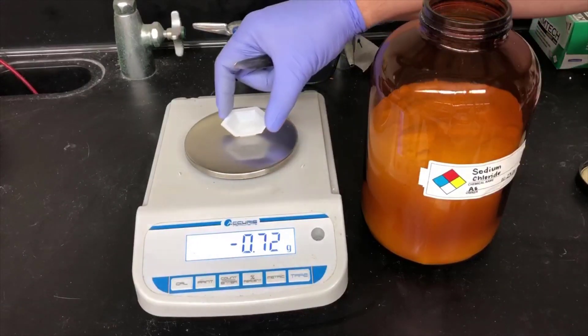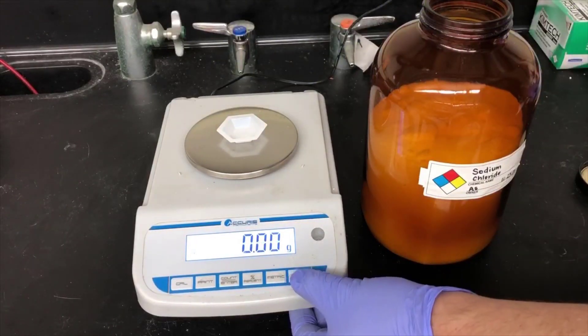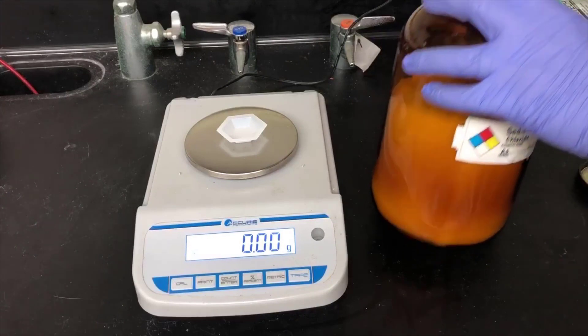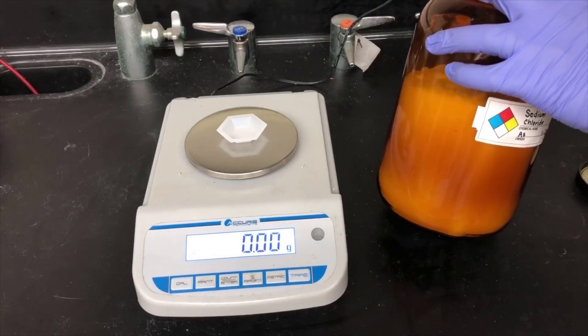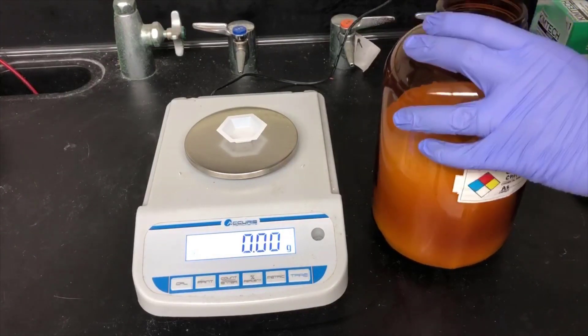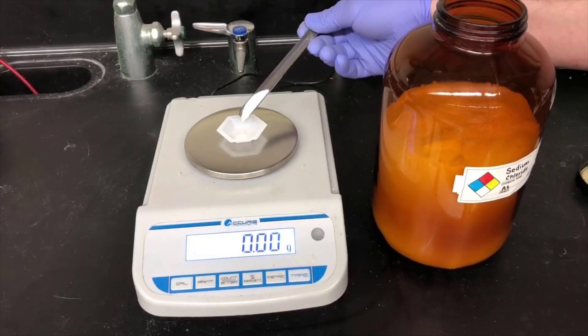Here I'm weighing out 0.5 grams of sodium chloride. That's table salt. I'm going to add this to the distillate, which contains the mixture of water and cyclohexanone.